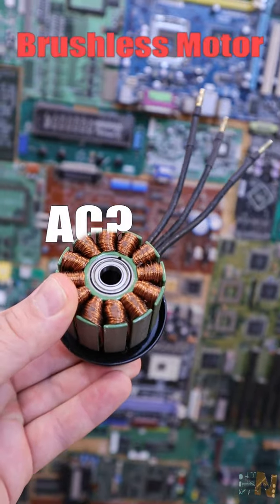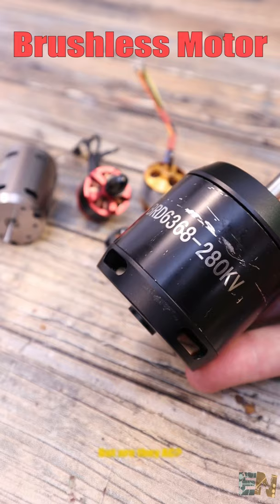A brushless motor like this one is AC or DC. I always see comments saying that these are AC, but are they?